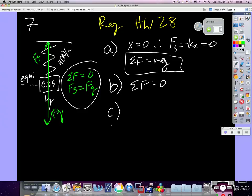So all I have to do is use this statement and say FS is equal to FG. So we get KX is equal to MG. So X is equal to MG over K. So that gives me 0.25 times 10, 16, divided by 40.